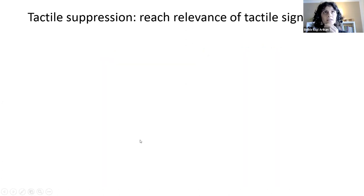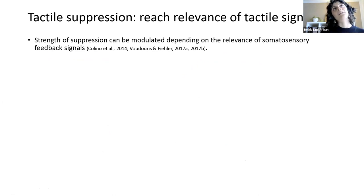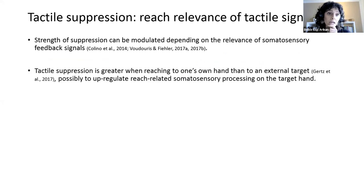So we have a clear picture of what tactile suppression is and its neural implementation, but more recent studies have demonstrated that it's not an all or none phenomenon. So the strength of suppression can actually be modulated depending on the relevance of the somatosensory feedback signals. So for example, suppression is greater when we reach to our own hand than we reach to an external target.